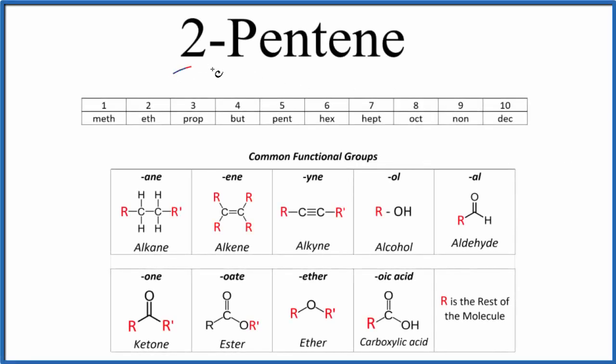Let's write the structural formula for 2-pentene. The molecular formula is C5H10, but that doesn't really tell us how the atoms are connected or oriented with each other.